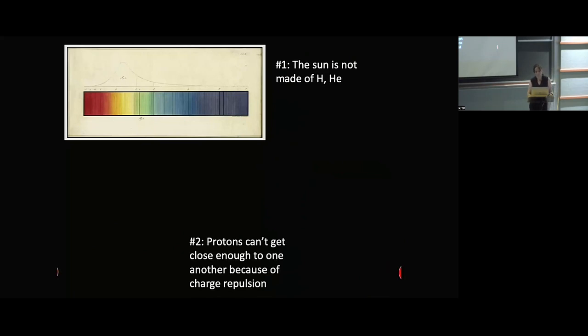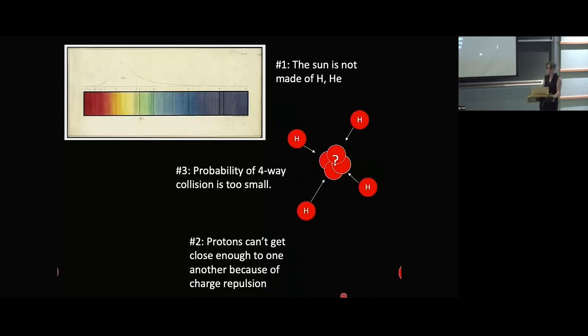Second, being positively charged, the protons would have to overcome their own electric repulsion to fuse, and they would have to be traveling extremely fast to be able to do that, much faster than what was expected in the sun. And third, the probability of four randomly moving protons to just come together right at the same time at the same place would have to be extremely small.